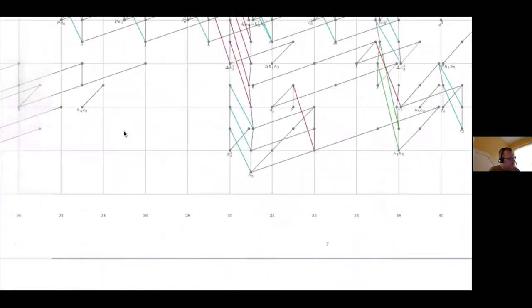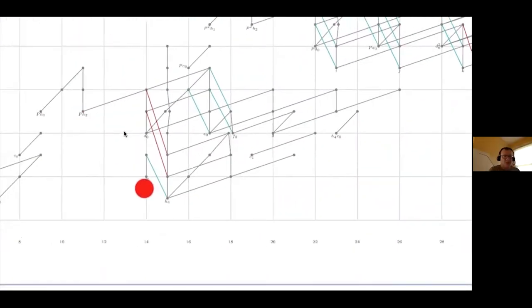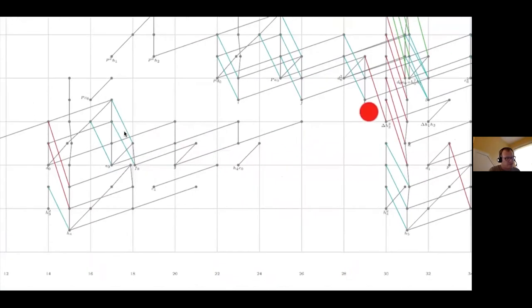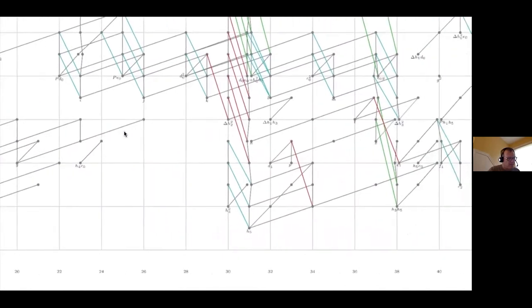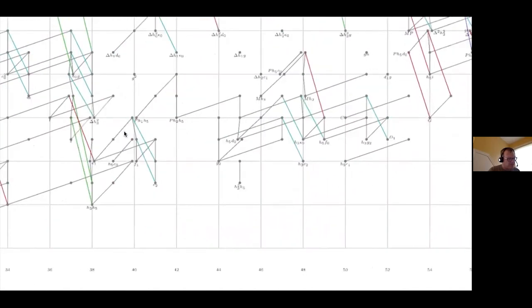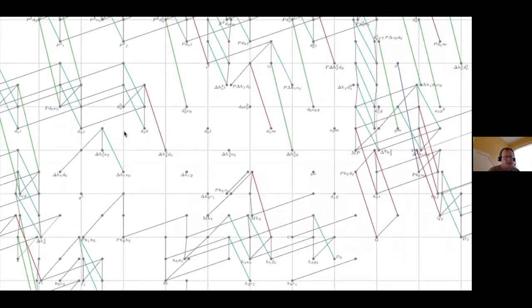Many of these differentials — all in this range — come immediately out of computer data via our deformation approach. The first one requiring extra work is in the 30-stem, and that's not too hard. The next ones are manageable for quite a while. The first differential I think of as currently genuinely hard is one in the 50s — everything up to that point we now consider relatively easy and well-known.